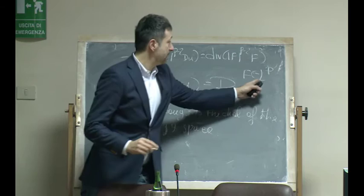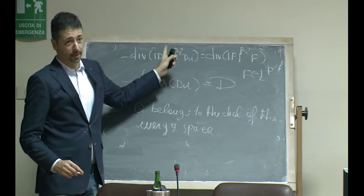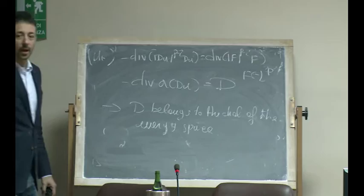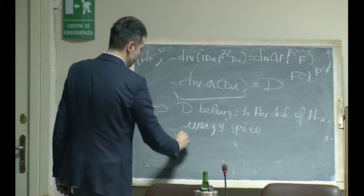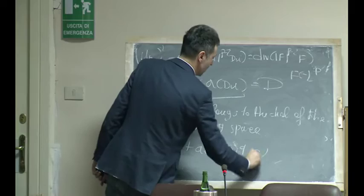Yesterday we have seen and analyzed two different situations. The first situation where this is the P-Laplacian operator, eventually with the parabolic case, and the second situation where this is a non-uniformly elliptic operator and the right-hand side is also supposed to be in the dual, because the initial condition in the second case was that F to the P plus A(x) F to the Q was in L^1. This plays the same role as before.